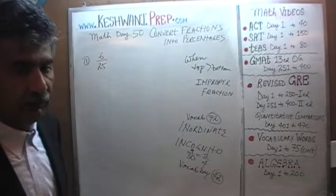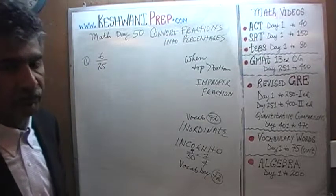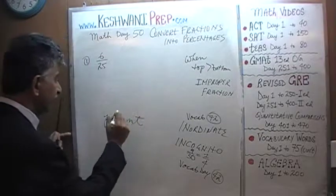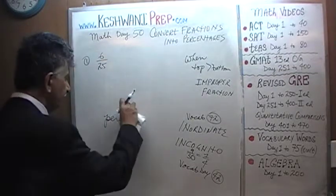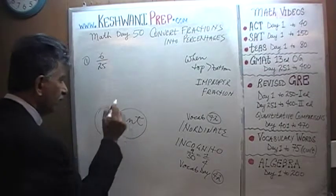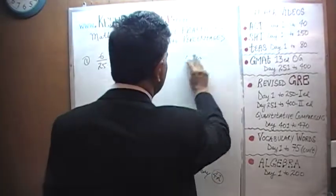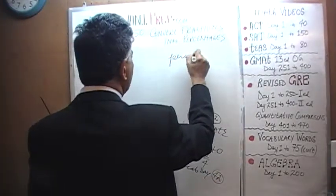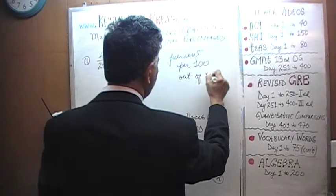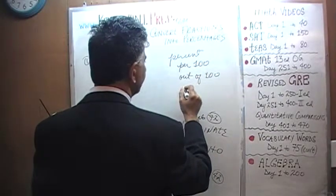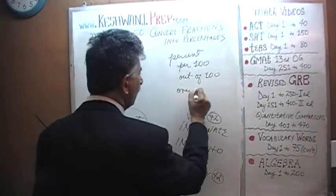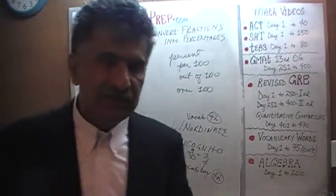The answer to that question lies in understanding what the word percent means. The word percent — there is no 'i' in there. The word percent means exactly what it says: percent literally means per 100, or out of 100, or over 100. Percent means the parts out of 100.